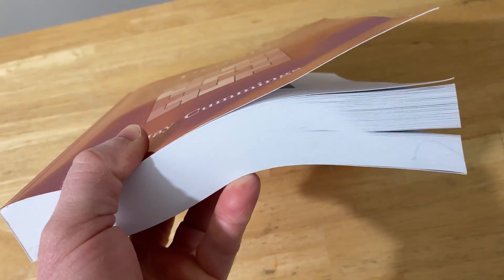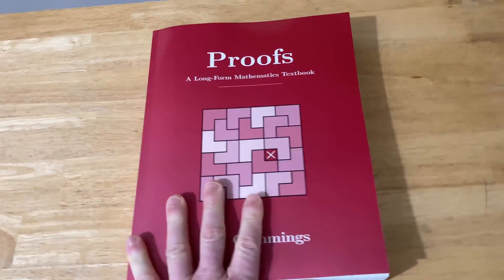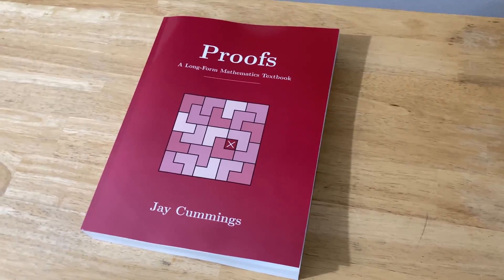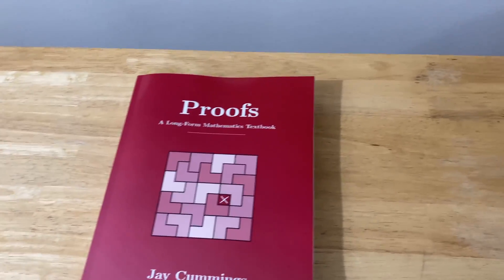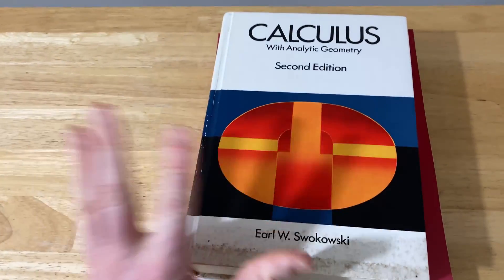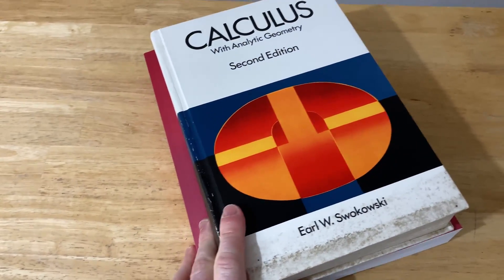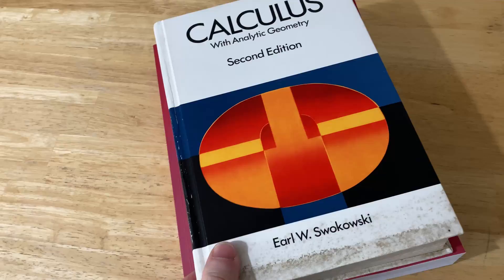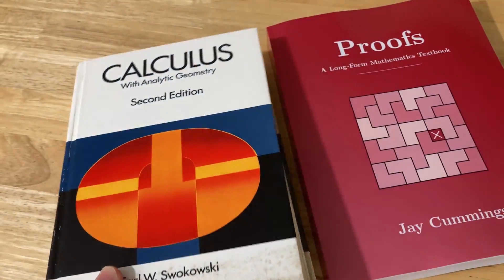Gotta say something about the size of this book. Look how big it is. It's just huge. Here, let me just put another book here for comparison, so you can see. So here I've got a big old calculus book, kind of like the size of maybe Stewart's calculus or Larson's calculus. This is the one by Swakowski, and look at the size.